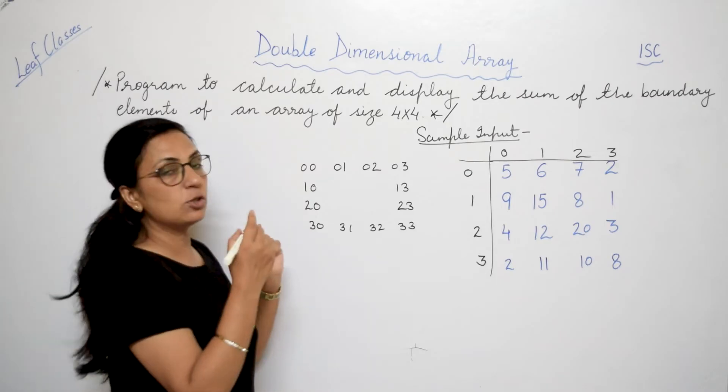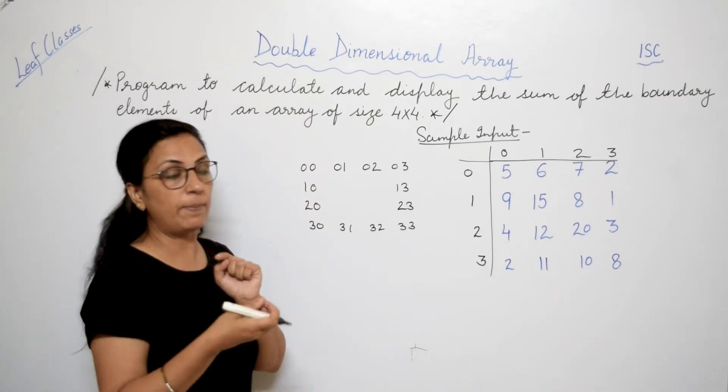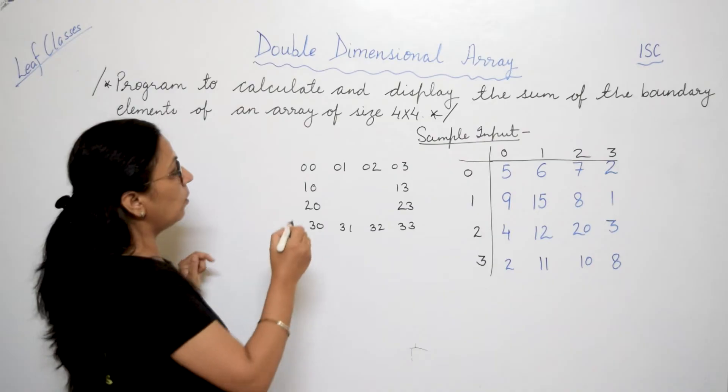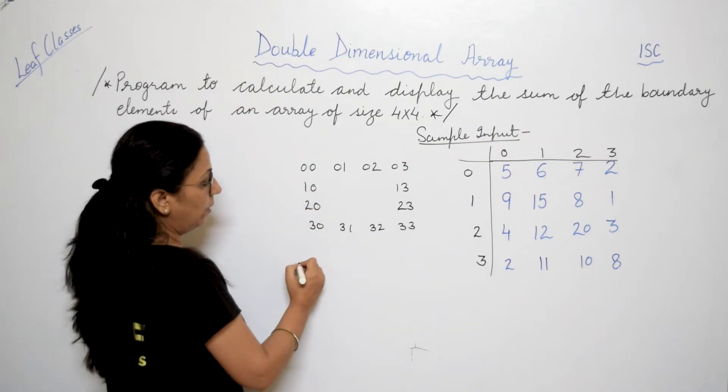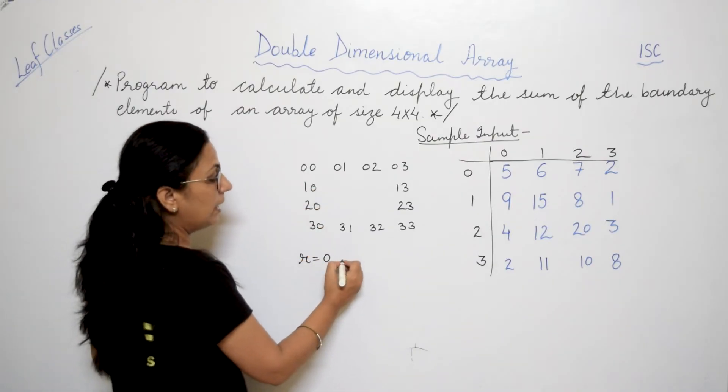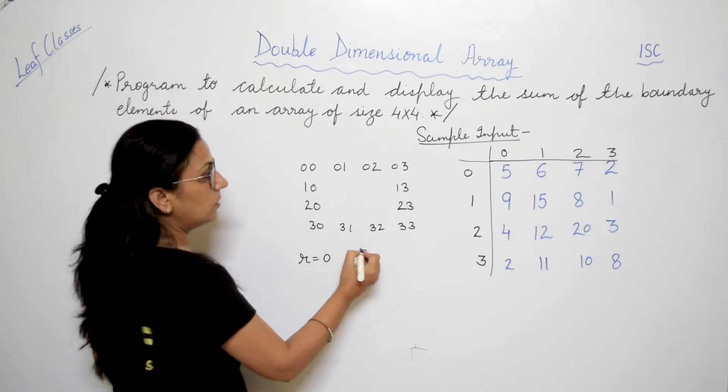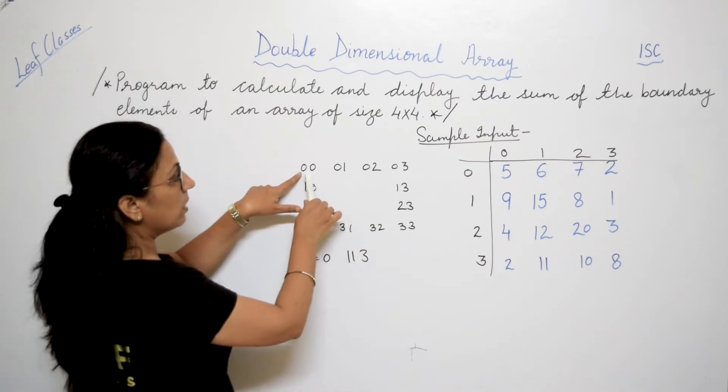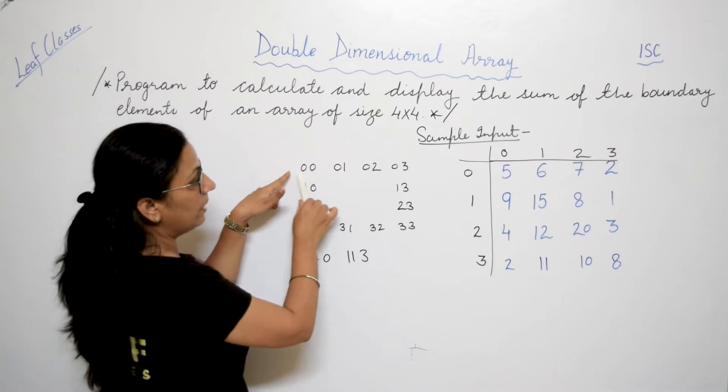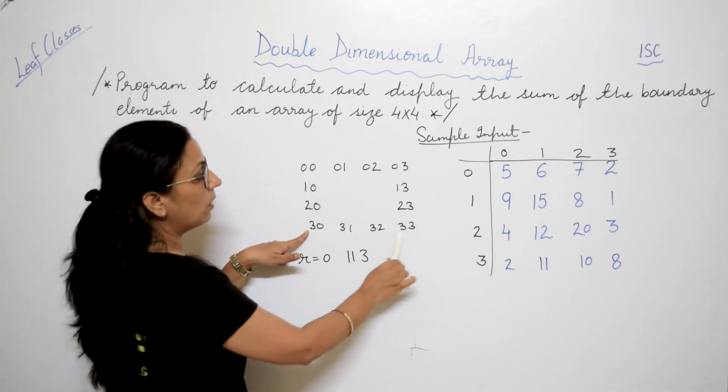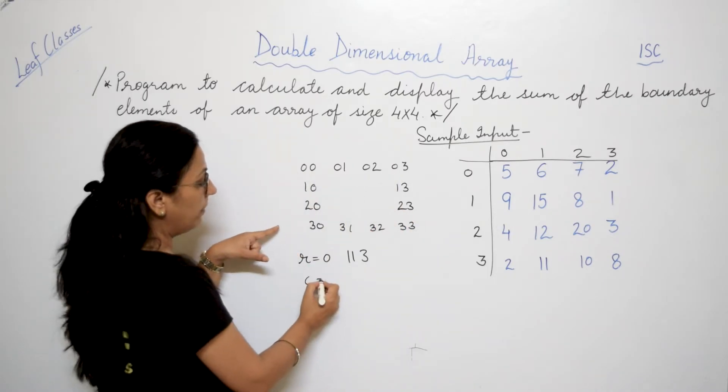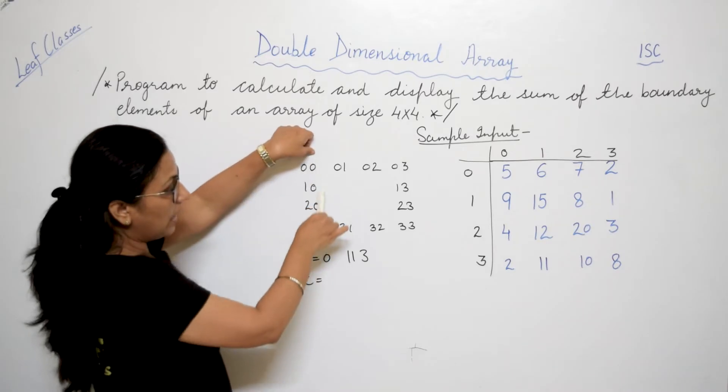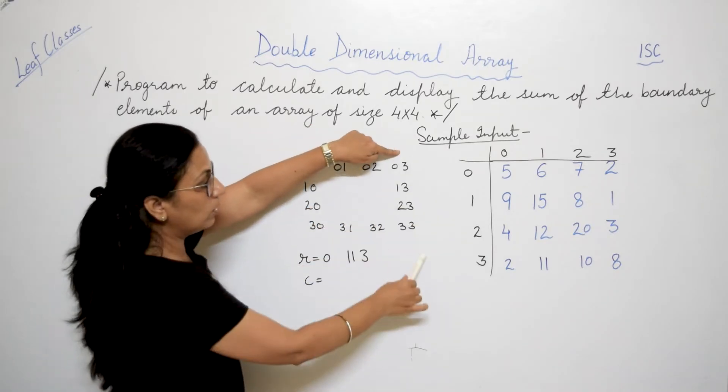Now, what is common in this? What pattern can we see in this? So in this, what are you getting in row number? Row number is either 0 or it is 3. See, which is the row number? 0, this is the row number, or the row number is 3. And what should be the value of column? Either it will be 0 or it will be 3.